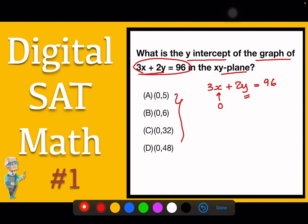So 3 into 0 plus 2y equals 96, so the result is 0 plus 2y equals 96, and y equals 96 divided by 2, and we got y equals 48. So this is going to be the answer, choice D. This is the easiest way to solve this problem, and it's time saving.